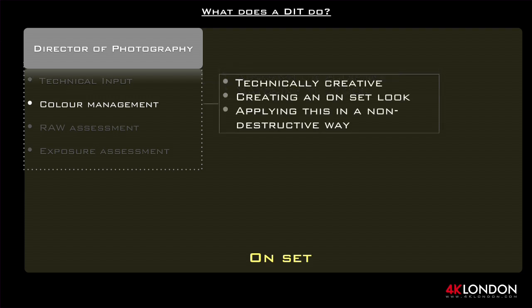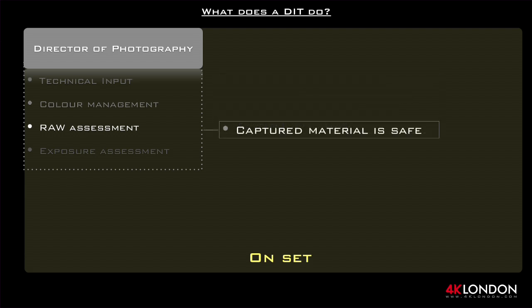The DIT will be able to advise on the advantages or limitations of using certain equipment and processes to achieve the goal of the DOP. We can be technically creative in a non-destructive way. Using on-set colour management equipment, we can create a look that can be applied to the live feed and monitored by the DOP instantly. These colour decisions can be burnt into the dailies before reaching editorial. The colour management process can be worked on before shooting by using test footage in a grading suite with a colourist, a DOP, a DIT, and a colour scientist. Together they can generate the look for the project and deliver a custom 3D lookup table or LUT. For shorter form projects, the look can be created on-set and can deliver similar results. Raw assessment ensures that what has been captured is within the parameters of delivery.